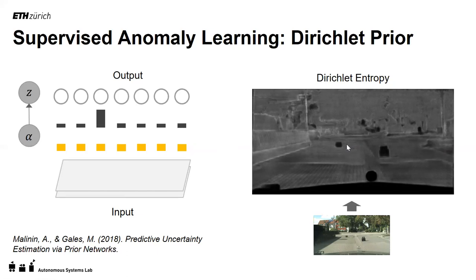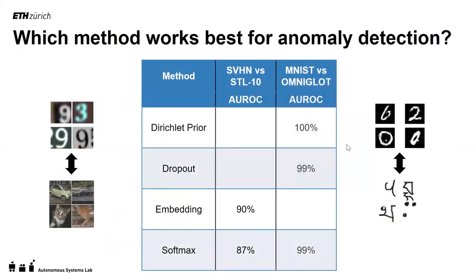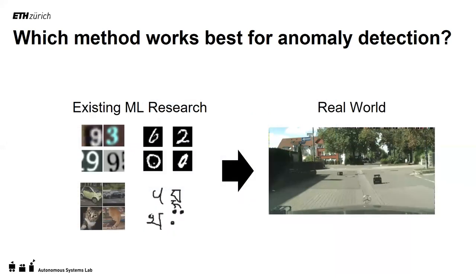If we evaluate all these techniques on popular machine learning datasets, we find that they work amazingly well. For example, using the MNIST dataset as training and Omniglot as out-of-distribution, it's practically a solved problem. Similarly for SVHN versus CIFAR — images of street numbers versus images of small objects — we are at 90%, even 87% with softmax, which was not working well before. But what is happening is that these toy datasets for proof of concepts are very far in difficulty from what exists in the real world.